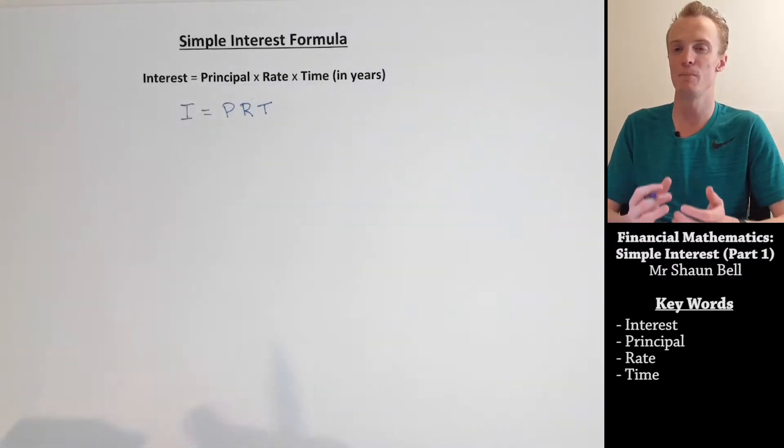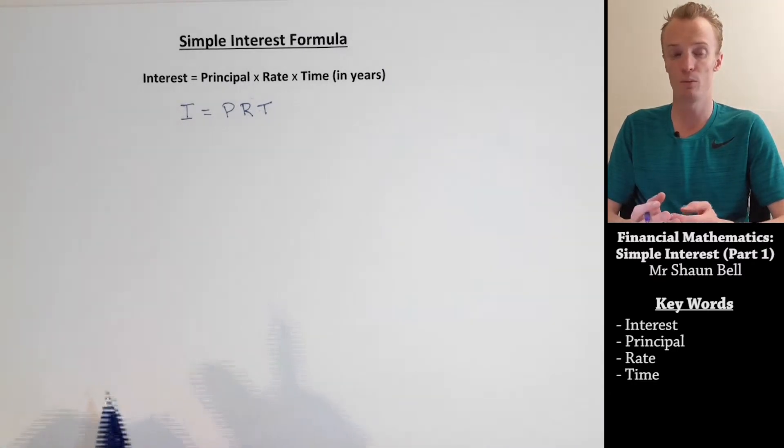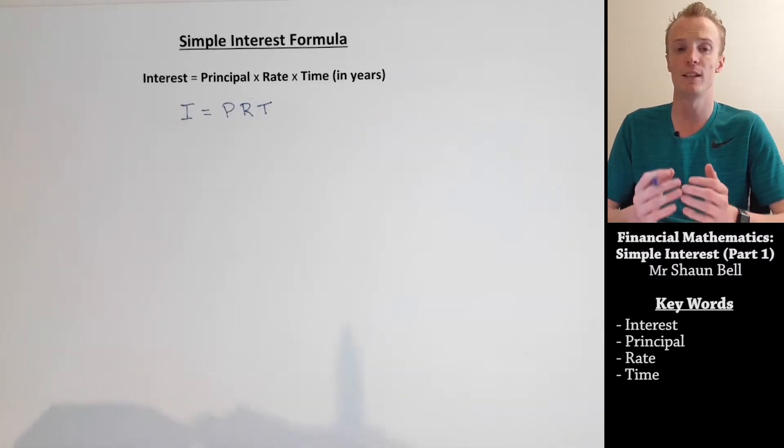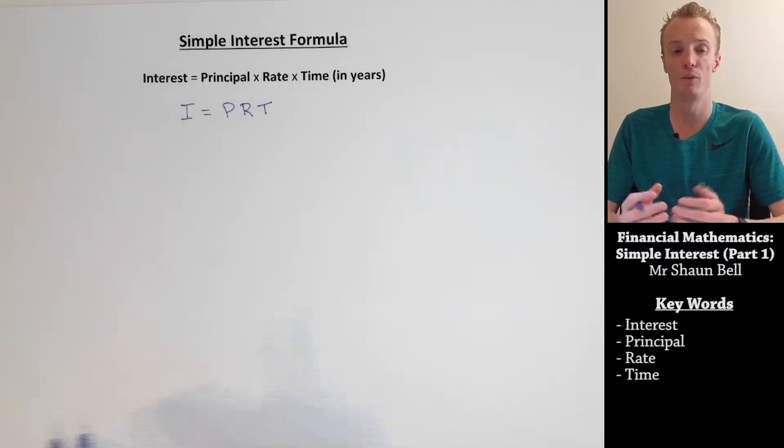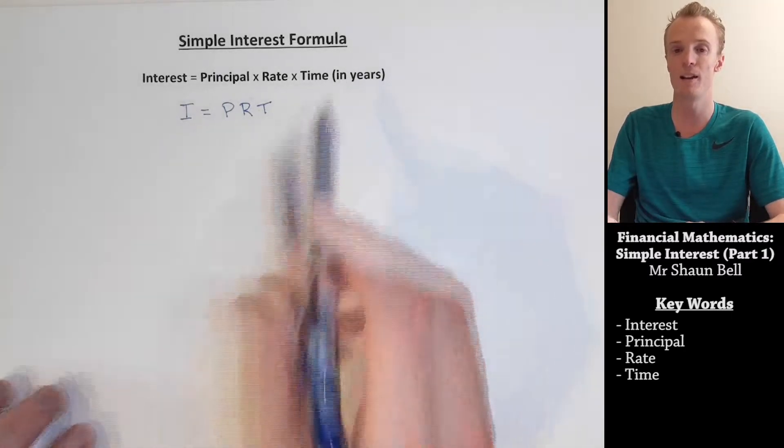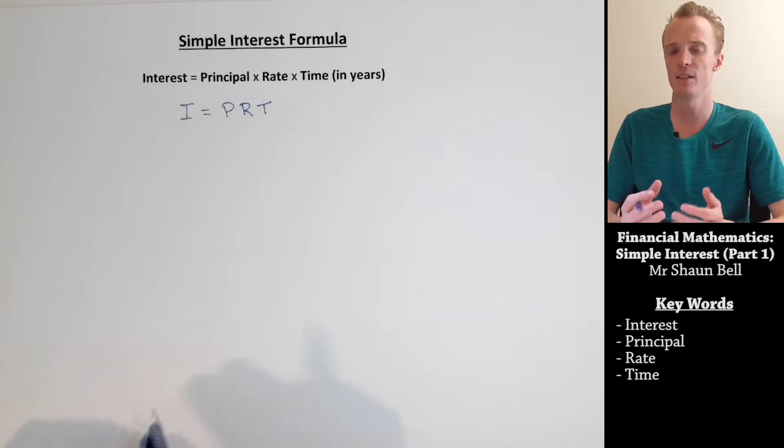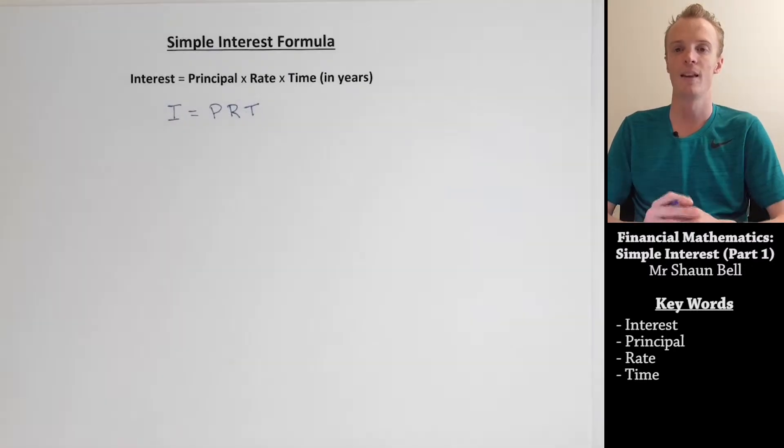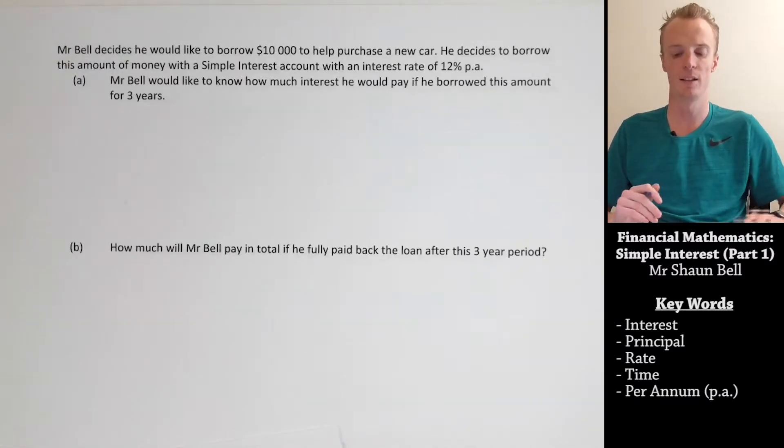The principal here is how much money was initially invested or borrowed. The interest is how much money above the principal that has accrued over a period of time. The rate, which can be referred to as interest rate, is the percentage that the interest is being accrued by, and time is how long the interest has been accrued for. Now, this time is always measured in years. If a problem presents itself that the units are not in years, we have to first convert these units to years as our first step.